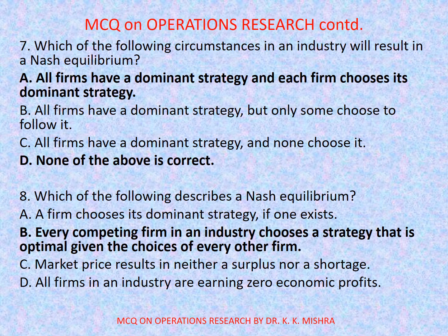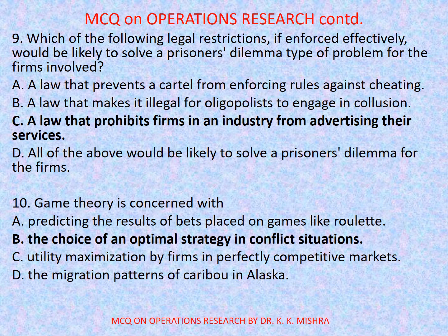Question number 9: Which of the following legal restrictions, if enforced effectively, would be likely to solve a prisoner's dilemma type of problem for the firms involved? Options are: a) a law that prevents a cartel from enforcing rules against cheating, b) a law that makes it illegal for oligopolists to engage in collusion, c) a law that prohibits firms in an industry from advertising their services, d) all of the above. Correct option is c) a law that prohibits firms in an industry from advertising their services.